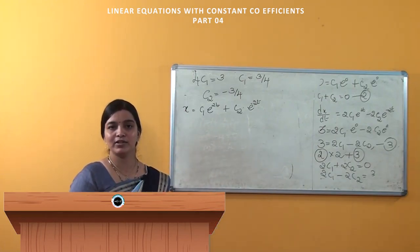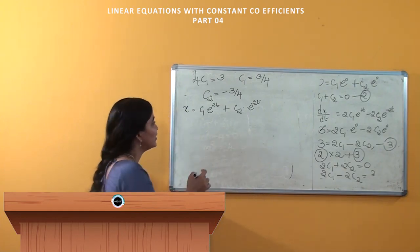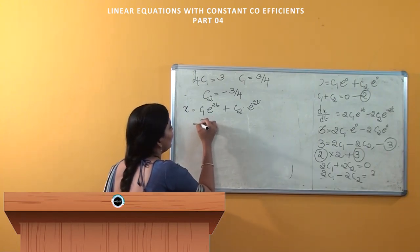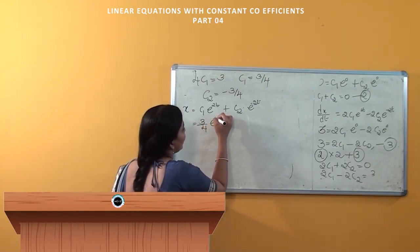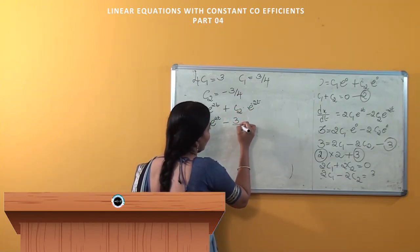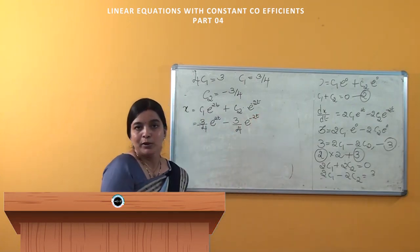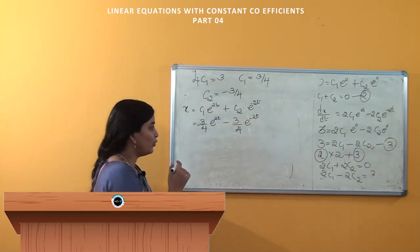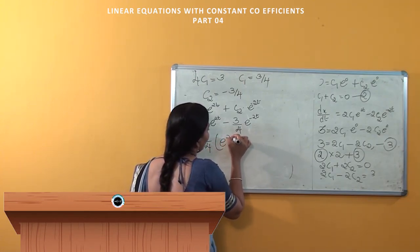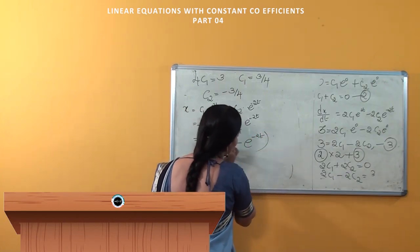Now we have the values of C1 and C2, so we substitute into the equation and simplify. C1 = 3/4, so we get (3/4)·e^(2t) minus (3/4)·e^(-2t). Here 3/4 is common, so we take it outside and obtain (3/4)(e^(2t) - e^(-2t)).